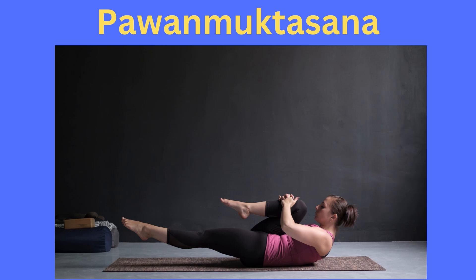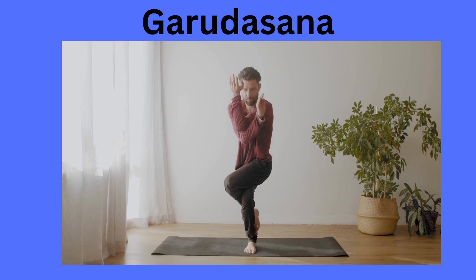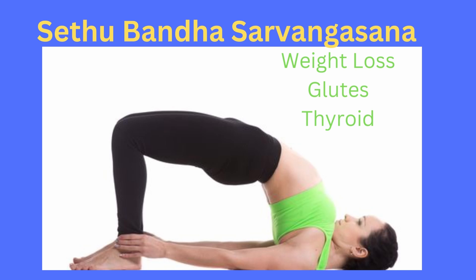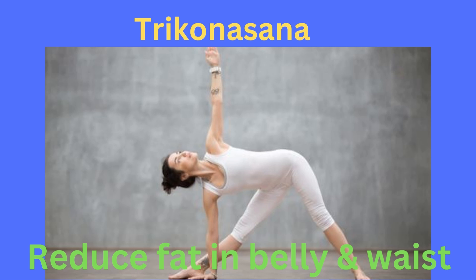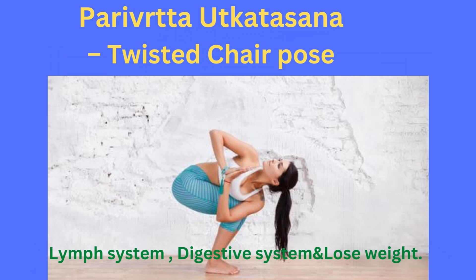You see the yoga poses. Pavan Muktasana, next Dhanurashana, next Garudasana, then Sedu Bandha Sarvangasana — it helps not only with weight loss but also your thyroid problem. Trikavanasana reduces the fat from the sides, raises your heartbeat, and burns calories. Parivrita Utkatasana will help to activate the lymph system and digestive system, and it helps to reduce the weight.